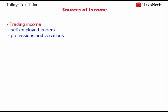Trading income also covers profits from a profession or vocation, so for instance a self-employed professional such as a solicitor or barrister would also have trading income. The next type of income to consider is property income — this is income from land and buildings such as rental income. Property income from UK land and buildings is kept separate from income from non-UK properties.